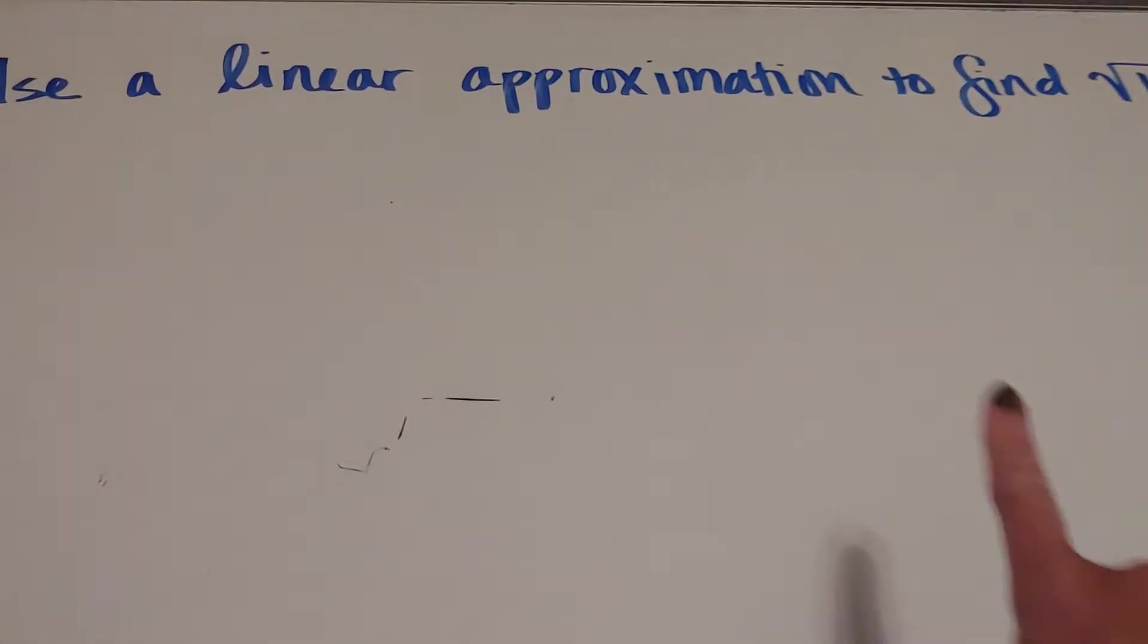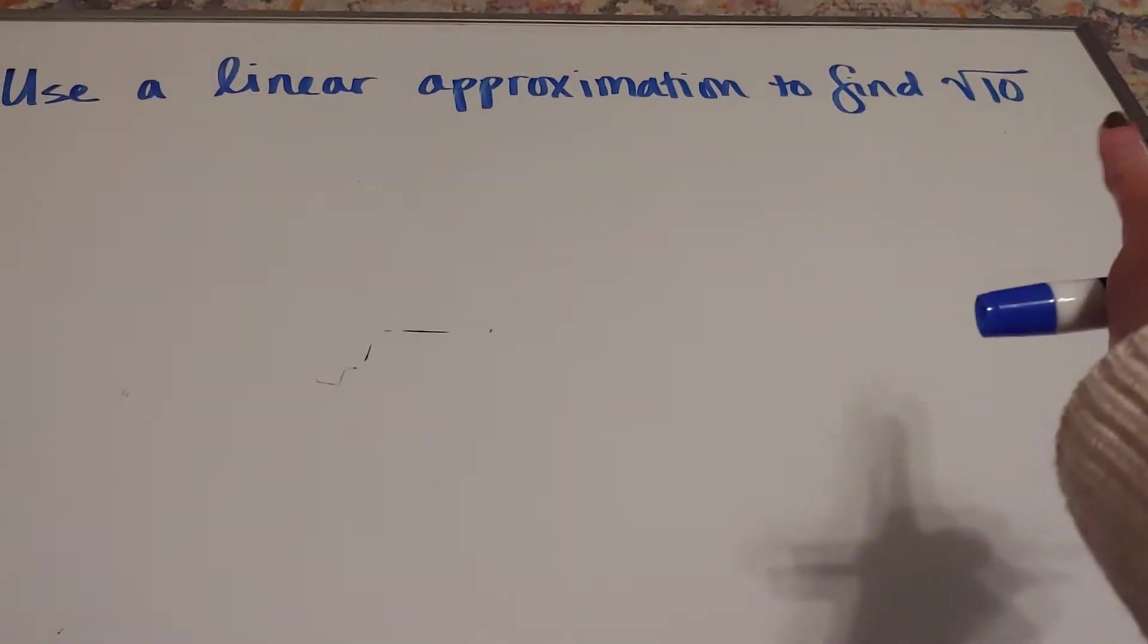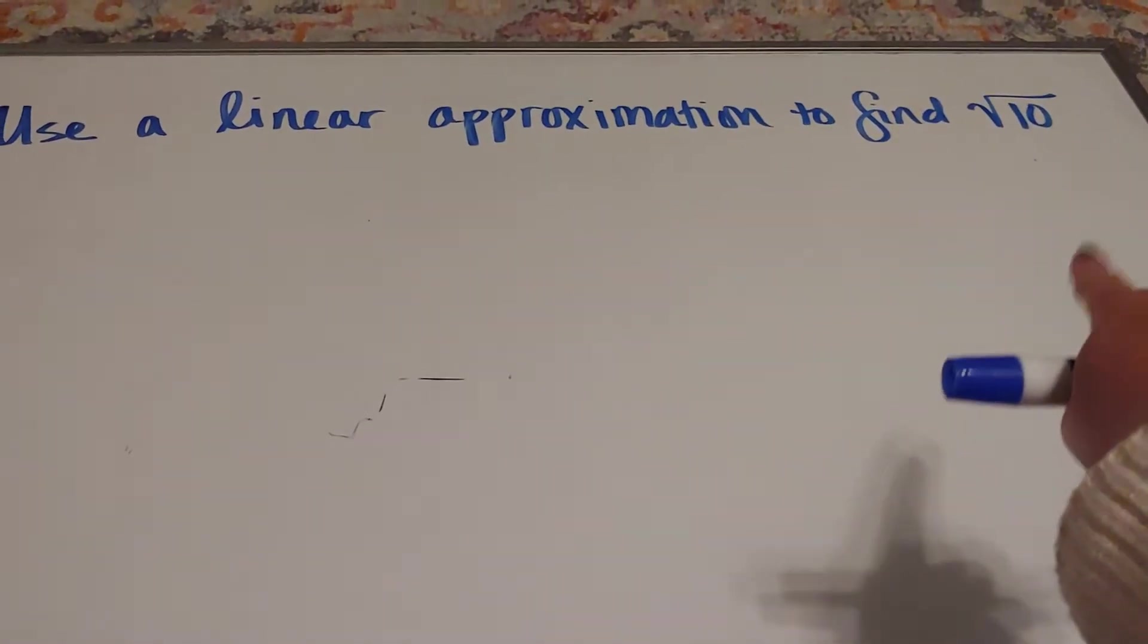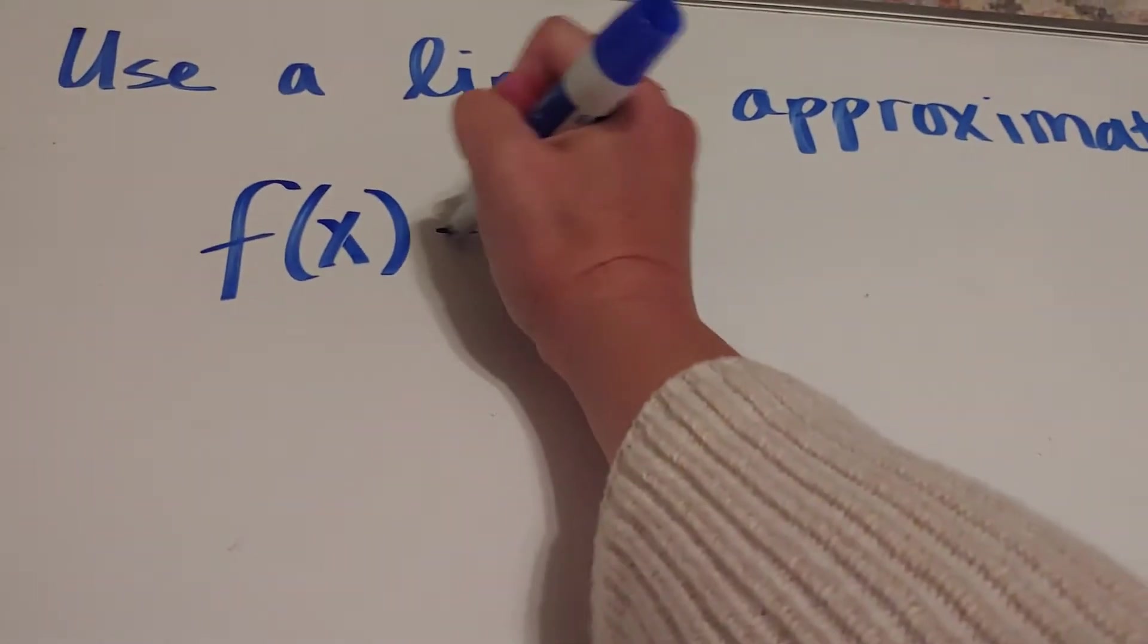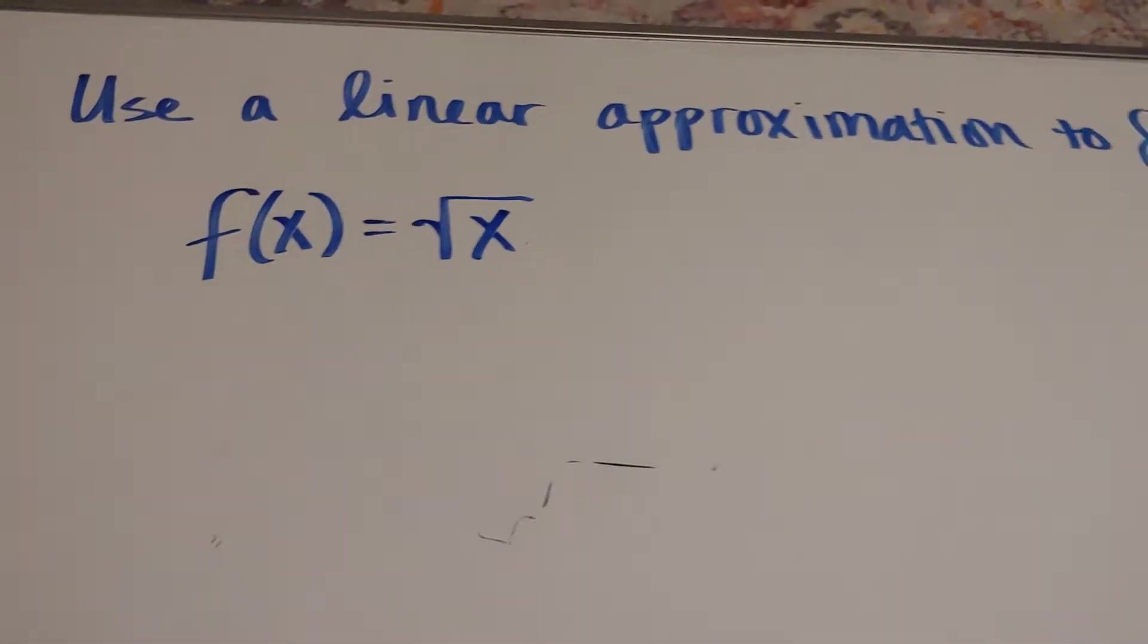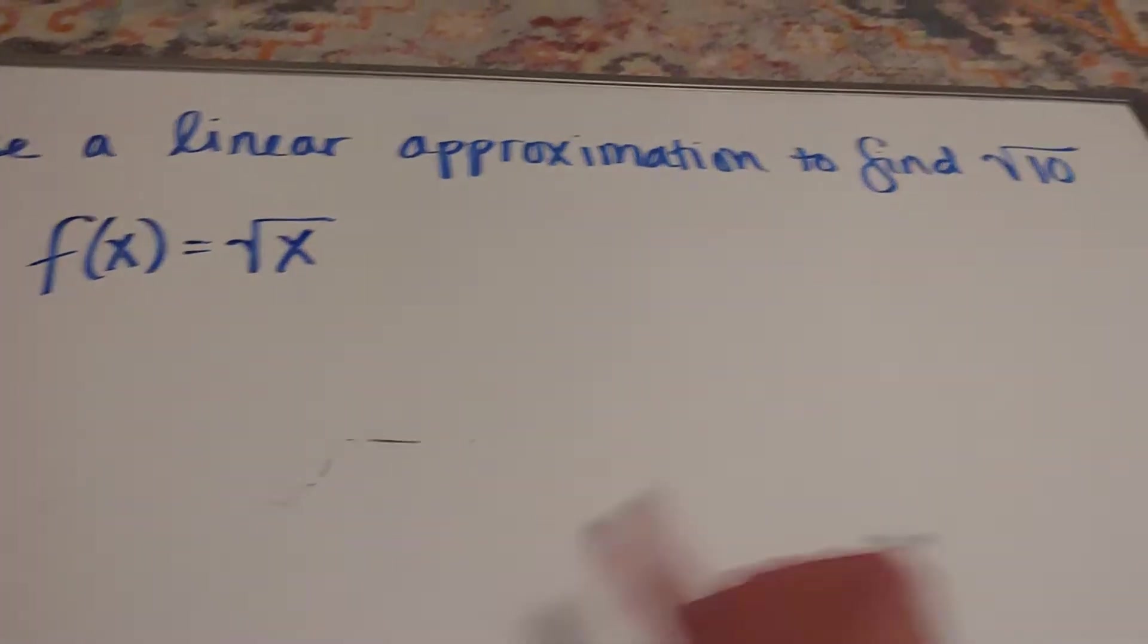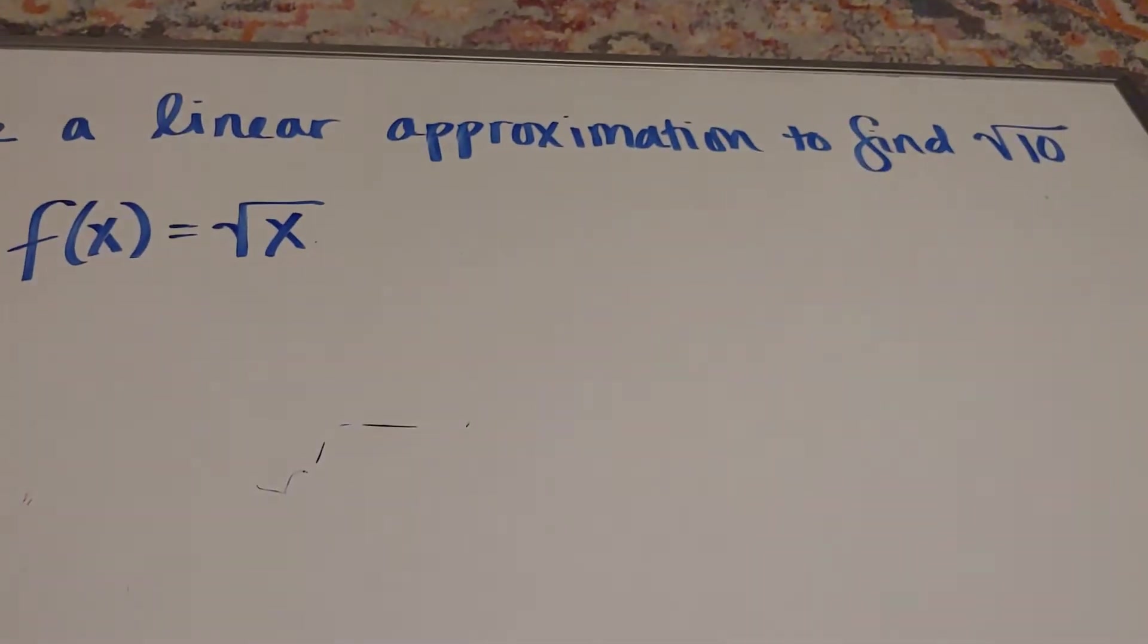A linear approximation is just a fancy name for a tangent line. Since I want to do the square root of 10, that's telling me two things. It's telling me that my function is the square root of x. So that's what I'm going to be putting a tangent line to is the square root function. If this was an ln, I'd have ln. If this was a cube root, I'd have cube root.